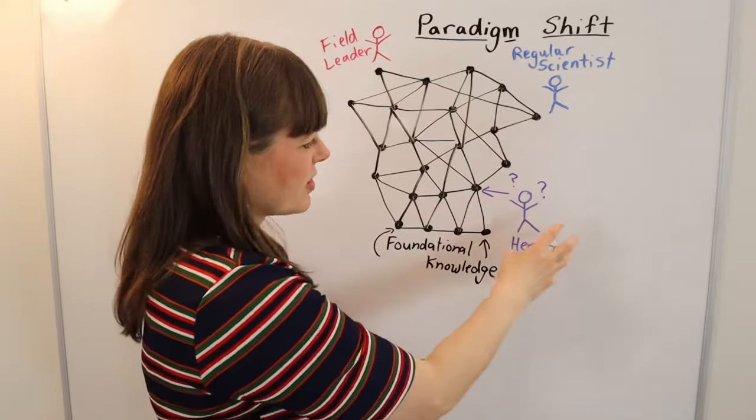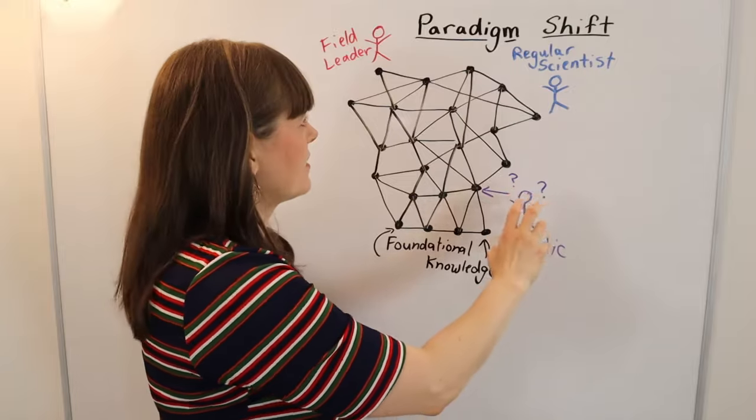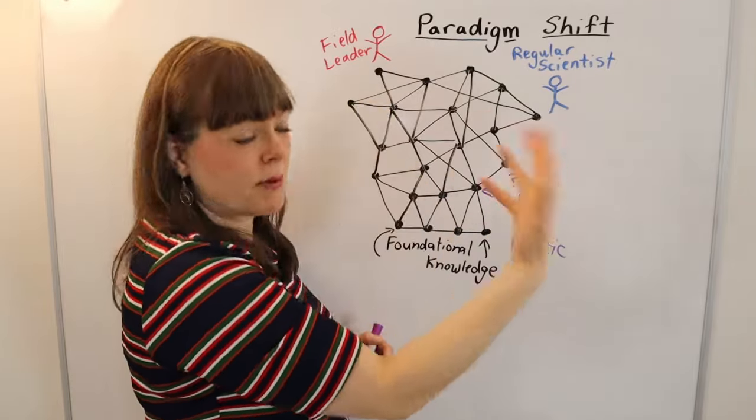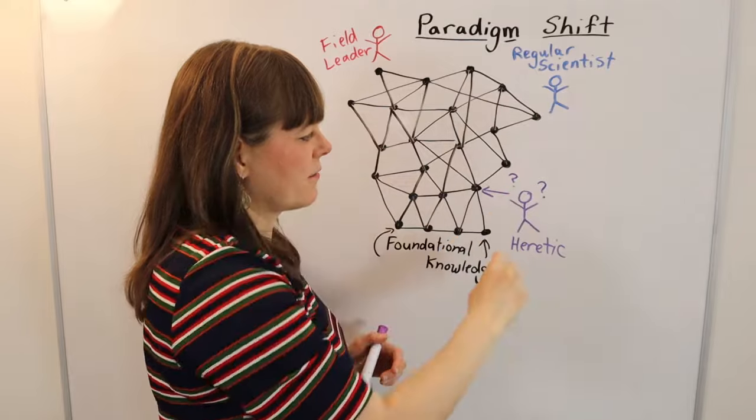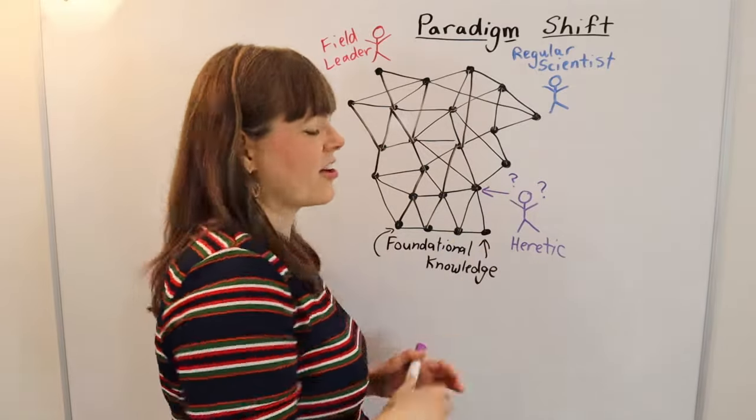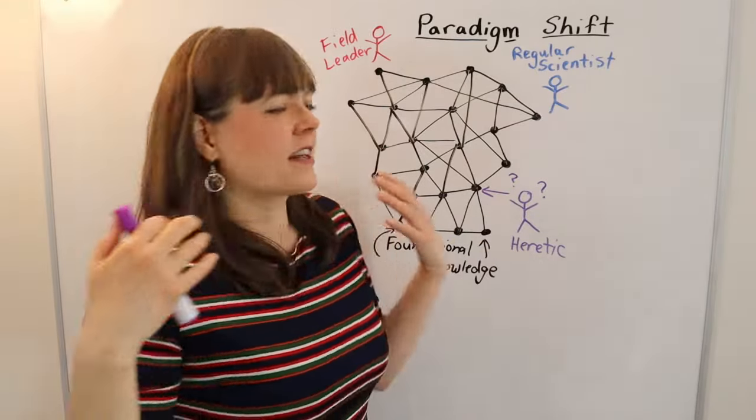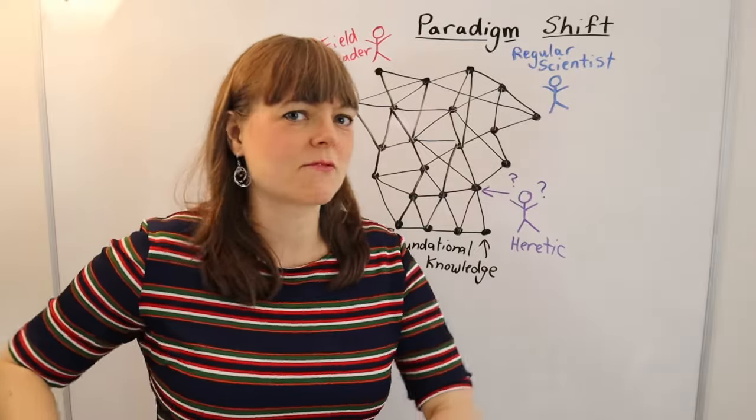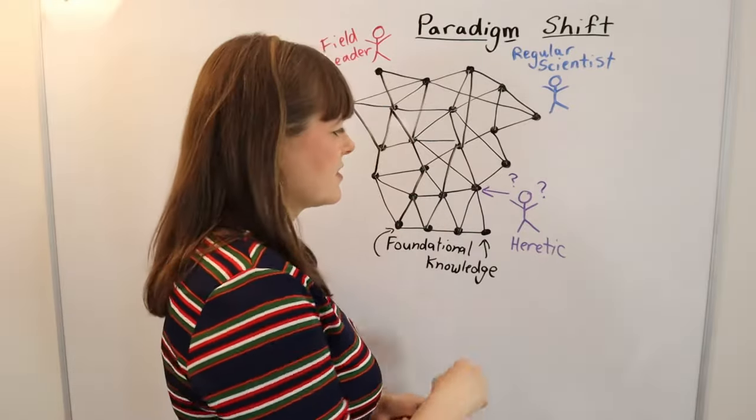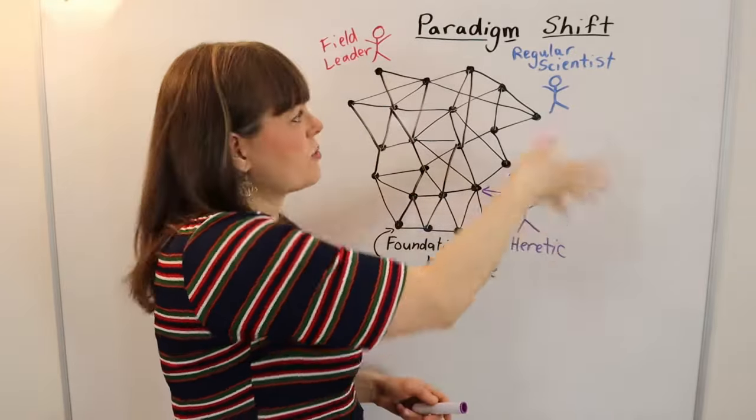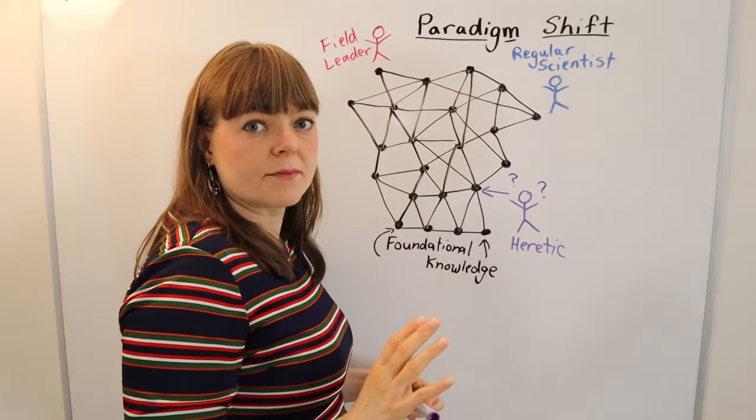So what generally happens before a paradigm shift goes through is the leaders in the field, especially, and other scientists within the field, start to attack the heretic, make things inconvenient for them, exclude them from journals and from conferences, because they're doing something that is threatening to the whole community.